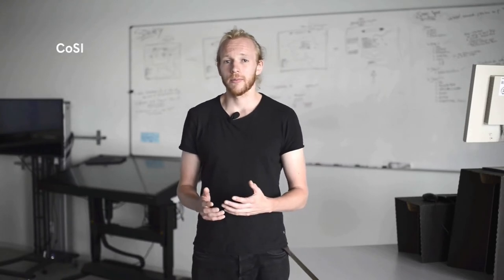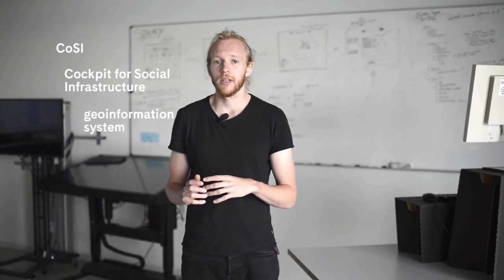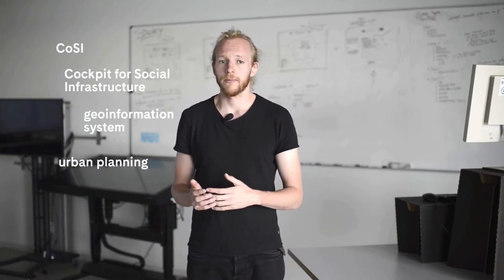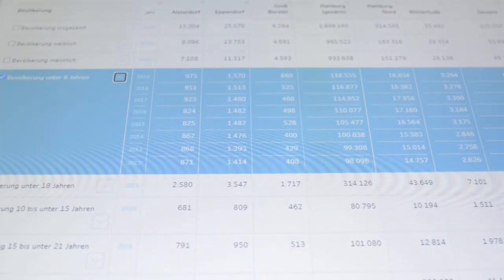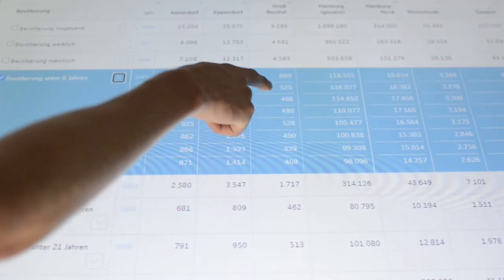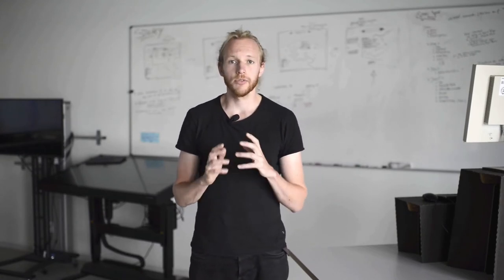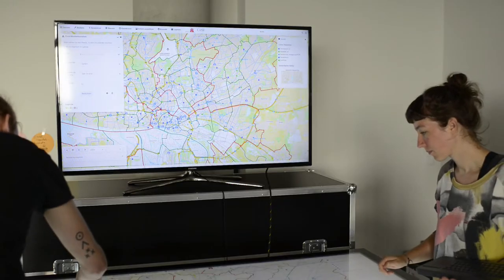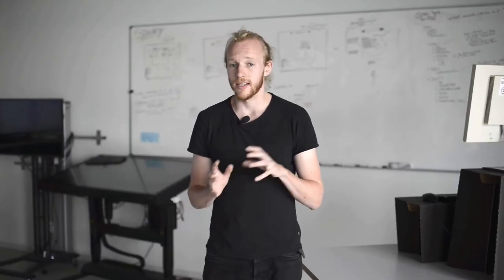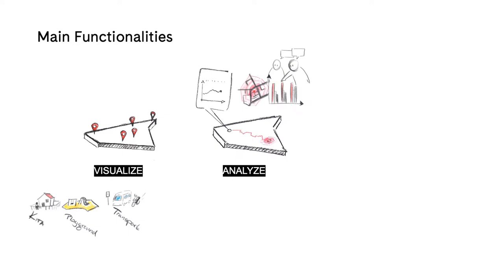The basic idea of COSI — the cockpit for social infrastructure — is to provide a web-based geo-information system that draws in real time from the urban data platform and gives access to information for urban planning. It is not a program that prints out the optimal solution through algorithmic processing. Rather, it provides insights and opportunities to work with the data at different stages of a project's development, and in particular to test different solutions through collaborative work. To achieve this flexibility, the tool has three main functionalities: visualization, analysis, and simulation.